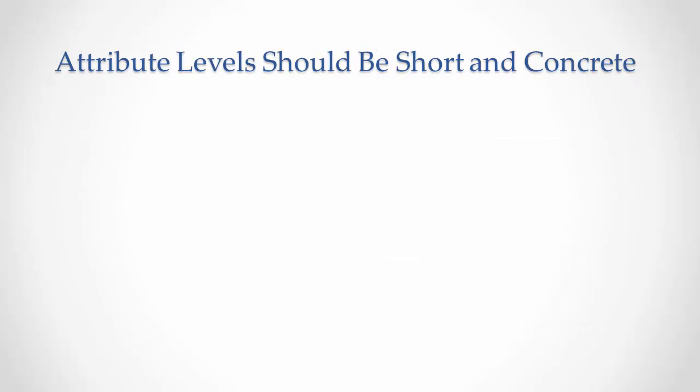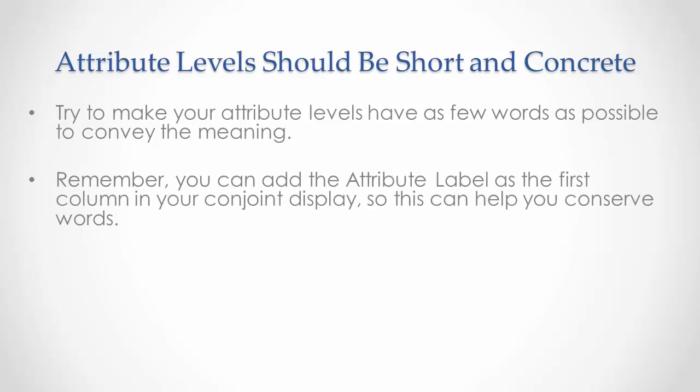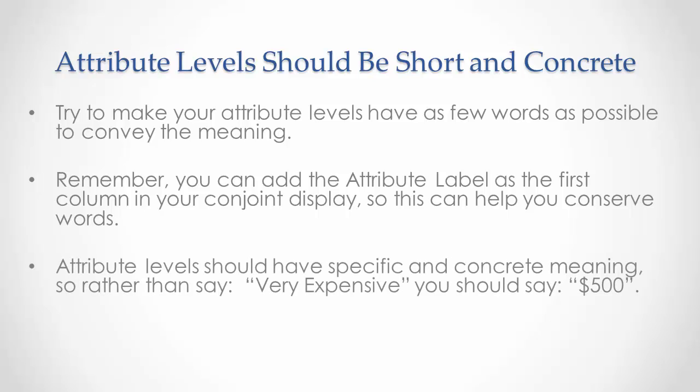The attribute levels should be short and concrete. Try to make your attribute levels have as few words as possible to convey the meaning. Remember, you can add the attribute label as the first column in your conjoint display, so this can help you conserve words with your attribute levels. Attribute levels should have specific and concrete meaning. So rather than say very expensive, you should say something like it's $500. Or rather than say five to seven kilos, you should say six kilos.